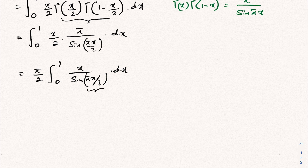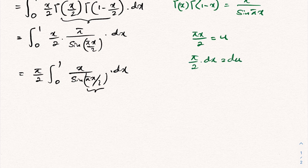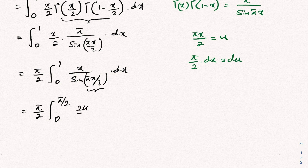We can take a substitution: let u = pi*x/2. Differentiating gives (pi/2) dx = du. We change the boundaries: when x approaches 0, u approaches 0; when x approaches 1, u approaches pi/2. And x equals 2u/pi.